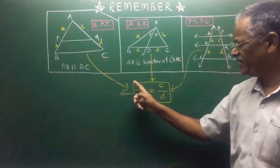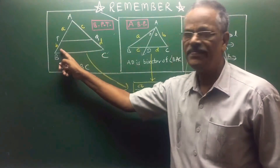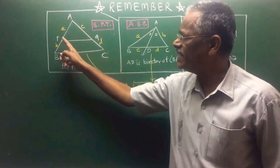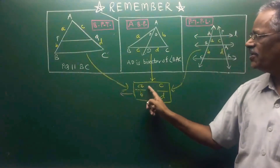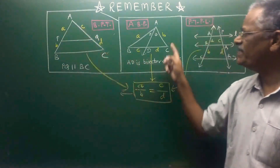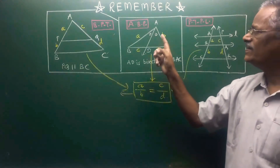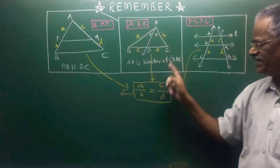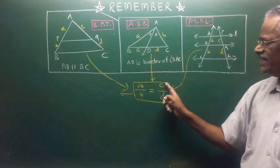I think we are getting a common result: A upon B is equal to C upon D. That is BPT — AP upon PB is equal to AQ upon QC, in short A upon B is equal to C upon D. Similarly, in the triangle if the bisector is given, we have already proved that AB upon AC, that is A upon B, is equal to BD upon DC, that is C upon D.